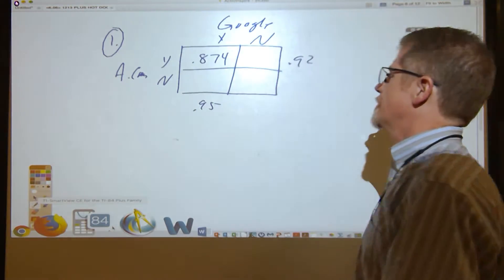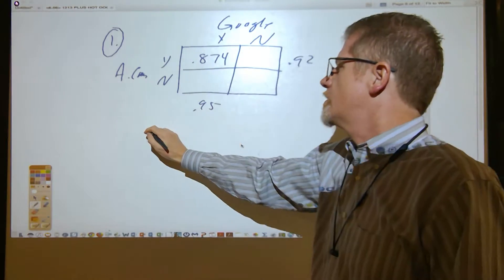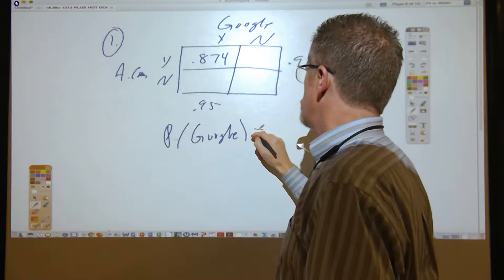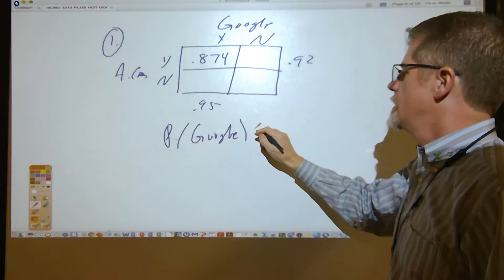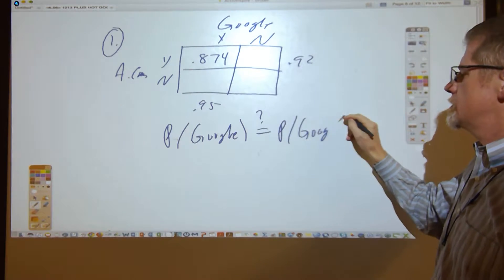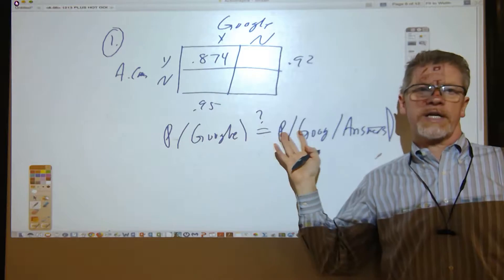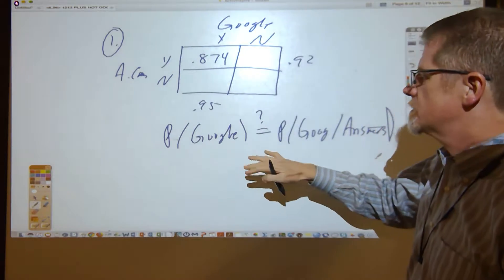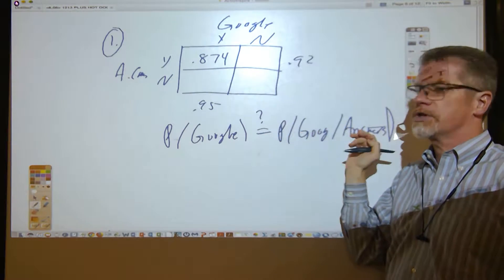Now, to see whether they're independent, there are two ways you can look at it. You can ask: is the probability of finding the answer on Google equal to the probability of finding it on Google given it's on Answers.com? The other way you could handle this is to look at the probability of finding the answer on Answers.com, comparing that to the probability of Answers.com given Google.